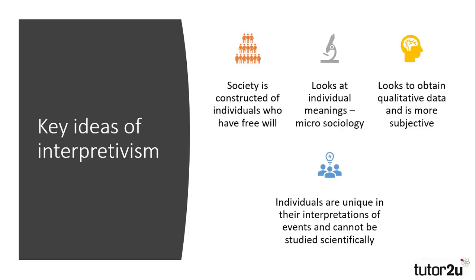One of the key ideas of interpretivism is that society is constructed of individuals and that the decisions and behaviours of these individuals then shape social institutions such as education, family, religion and media. While positivism focuses on structural explanations and tries to develop a one-size-fits-all approach, interpretivism looks at micro-sociology — the meanings that individuals prescribe to events rather than society's meta-narrative.